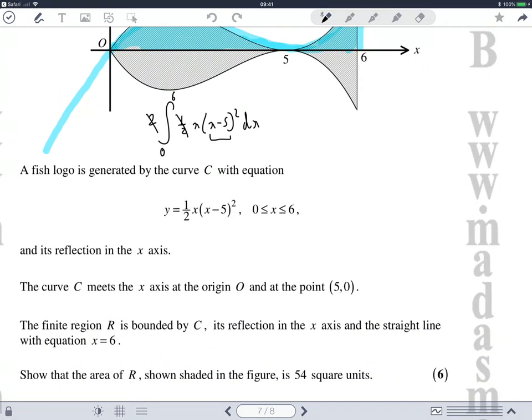the half and the two I can cancel those out which is kind of nice. Next up, if I expand x minus five squared I'm going to get x squared minus 10x plus 25 but then when I times it by x this becomes cubed, that becomes squared, that becomes x. So I'm integrating these things between zero and six.